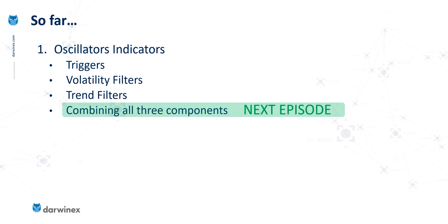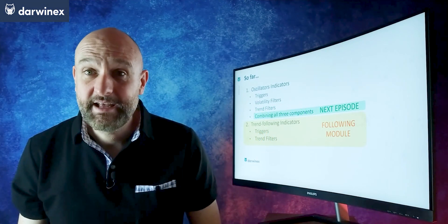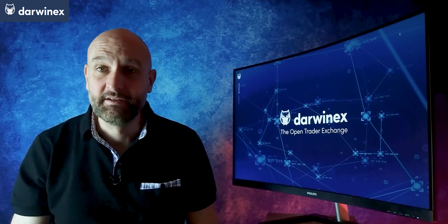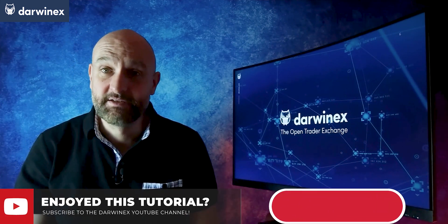That's going to be the topic of the next episode. And just so that you know where we're going with this in the future, we're then going to start looking at trend-following indicators. We've just focused entirely on oscillators, and by looking at trend-following indicators as well, it opens up a whole area of new opportunity in terms of building trading systems. If that next episode — where we're going to look at the combination of the trigger, volatility filter and trend filter — is available now, you'll see a link to it right here. If not, remember to subscribe so that you get notified when it is available.